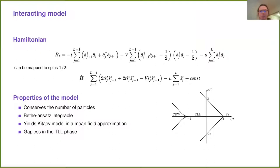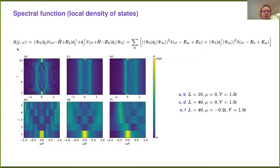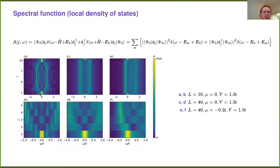Unfortunately, this problem is quite complicated — no quasiparticles exist and we can't write the topological invariant. But what we can do is calculate the local density of states, which can be probed in a scanning tunneling spectroscopy experiment. The expression for the local density of states is given here. The first row corresponds to the local density of states of the whole chain, and the bottom pictures correspond to a zoom of the upper pictures.